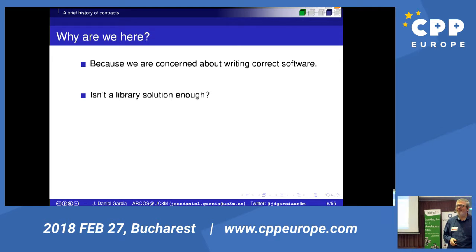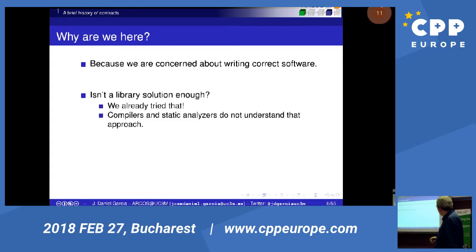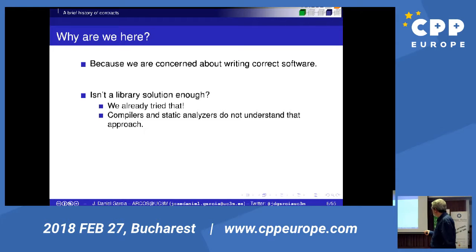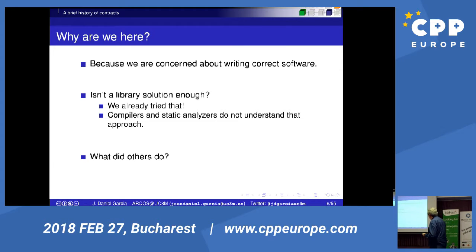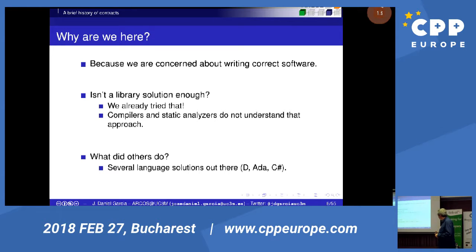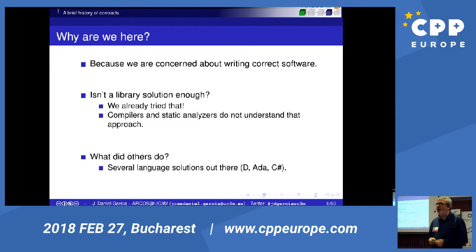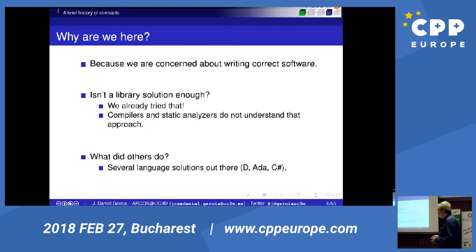The next question is: isn't a library solution for contracts enough? We have tried multiple times and found that compilers and static analyzers do not understand that approach well — it's something in your library and the only thing you can do is check and fail, which is not really enough. We also looked at what other languages have been doing: D, Ada 2012, and C# have code contracts, which could inspire us, but we needed to do a lot of customization for C++.